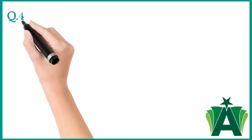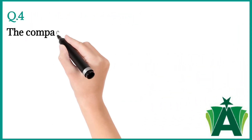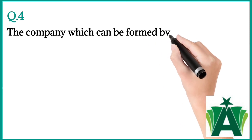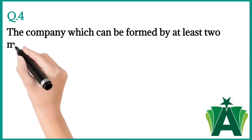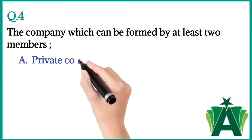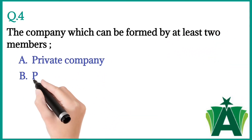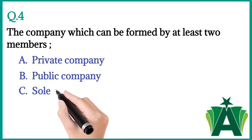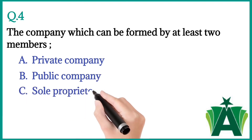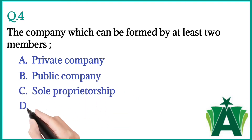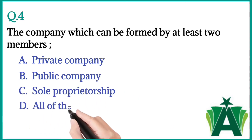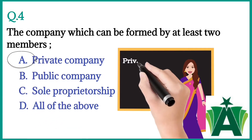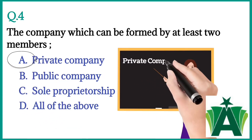Question number four: The company which can be formed by at least two members — a) Private company, b) Public company, c) Sole proprietorship, d) All of the above. The correct answer is a) Private company.